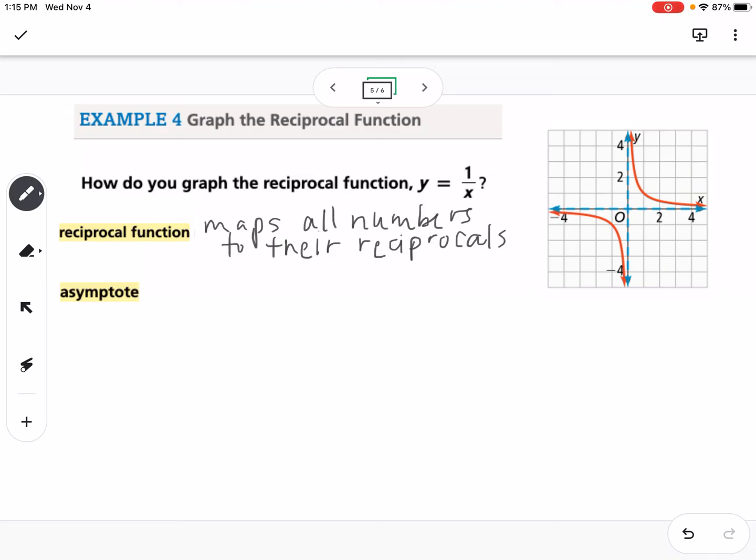Remember, reciprocals are flipping the numbers. So if you have 2, the reciprocal is 1 half. If you have 2 thirds, it's 3 over 2.